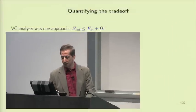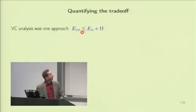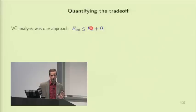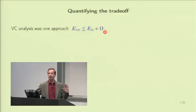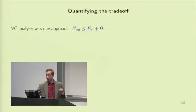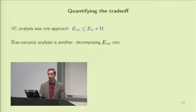In the VC analysis, the generalization bound decomposes E_out into E_in — which represents approximation, since you're fitting the target function on the sample — plus omega, which is purely generalization. The bias-variance analysis has another approach: it also decomposes E_out, but into two different entities. The first is an approximation entity — how well H can approximate F overall, not just on your sample. It asks: as if you had access to the target function, which hypothesis in your set best describes it, and how well does that best hypothesis perform?